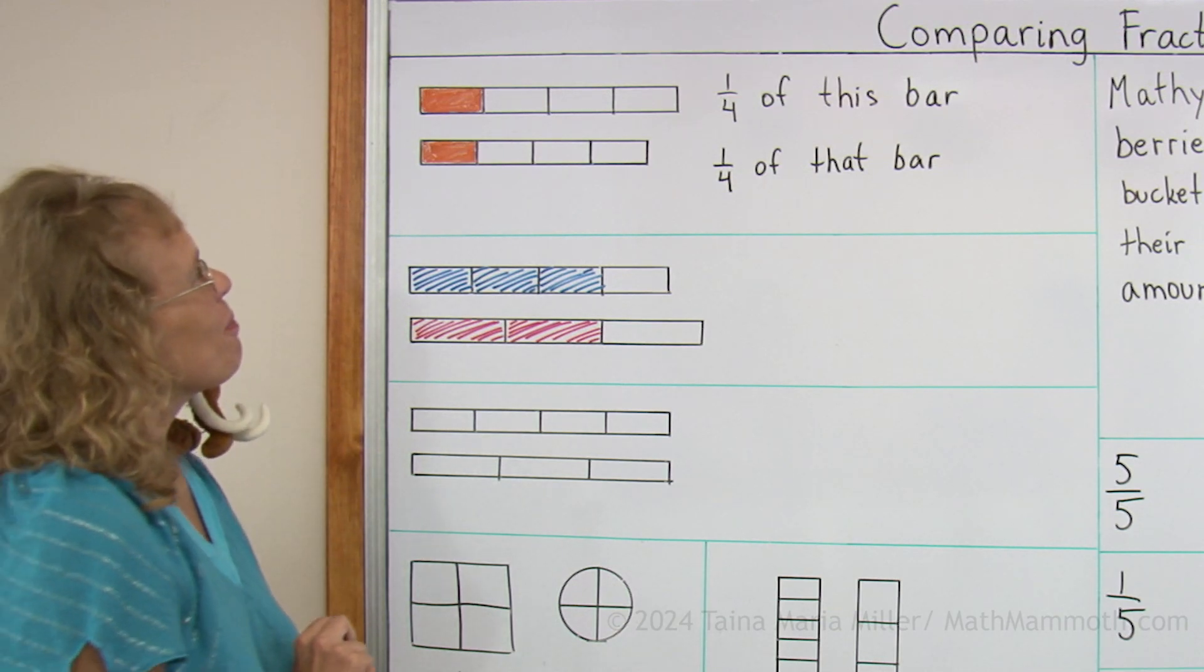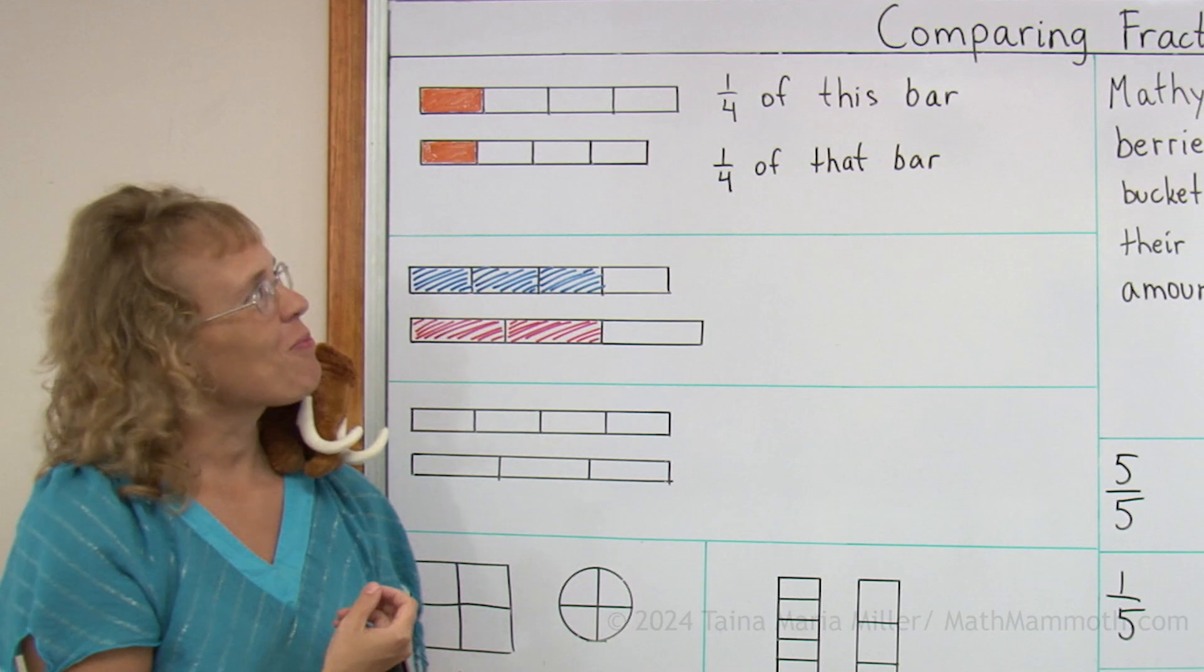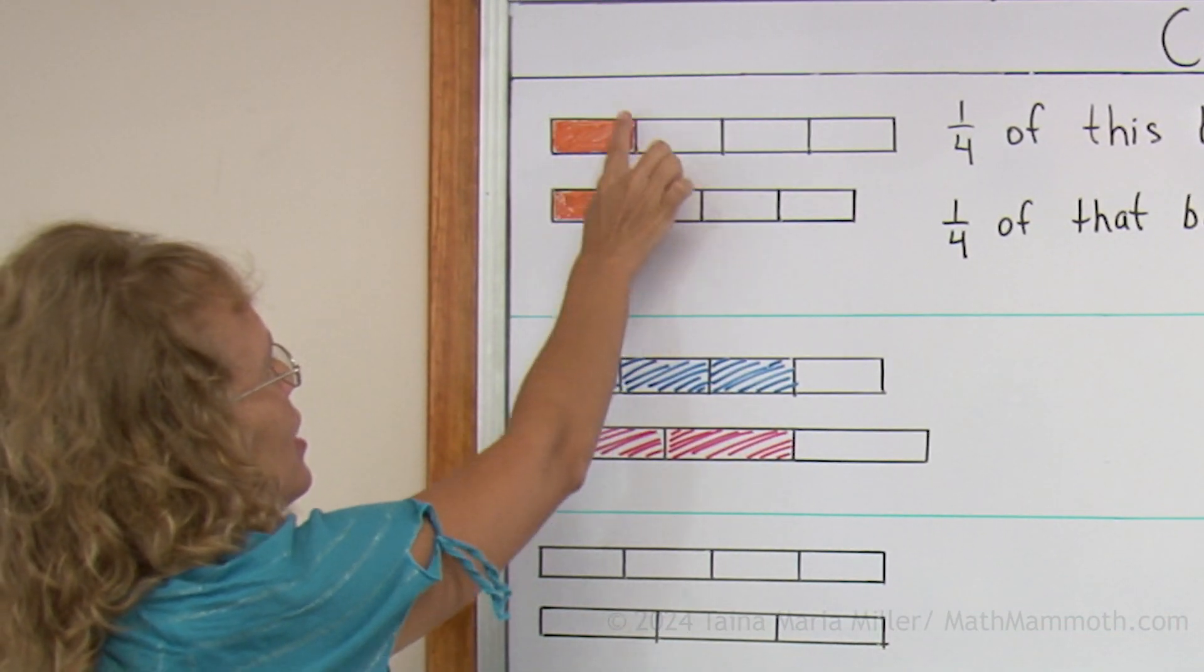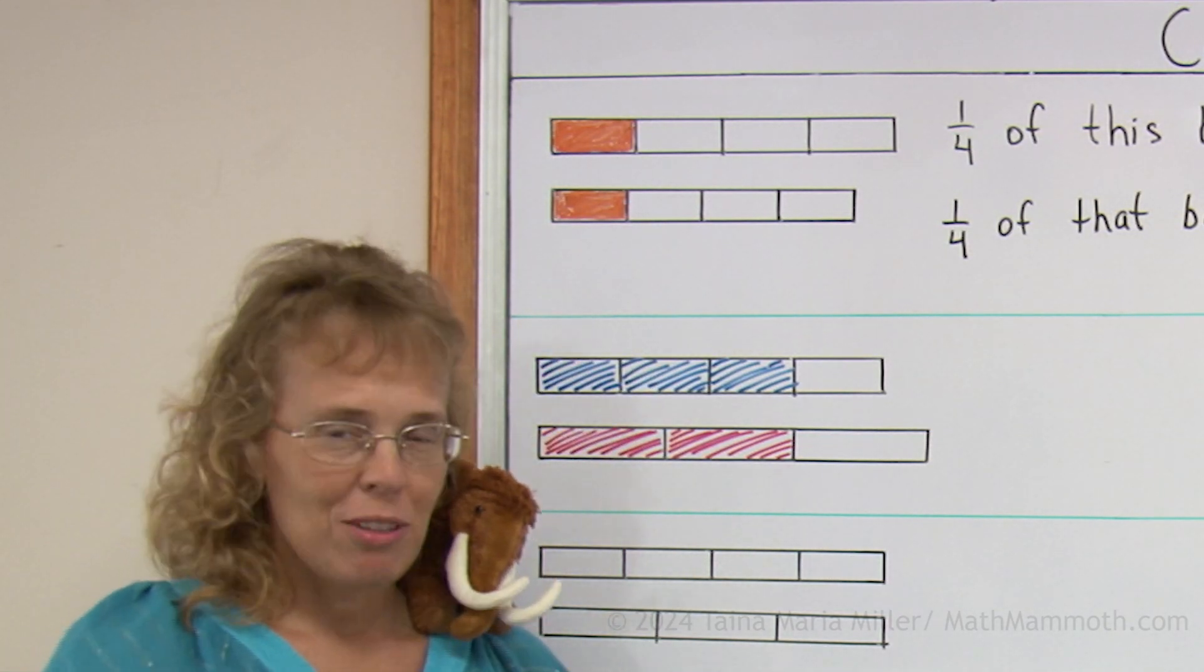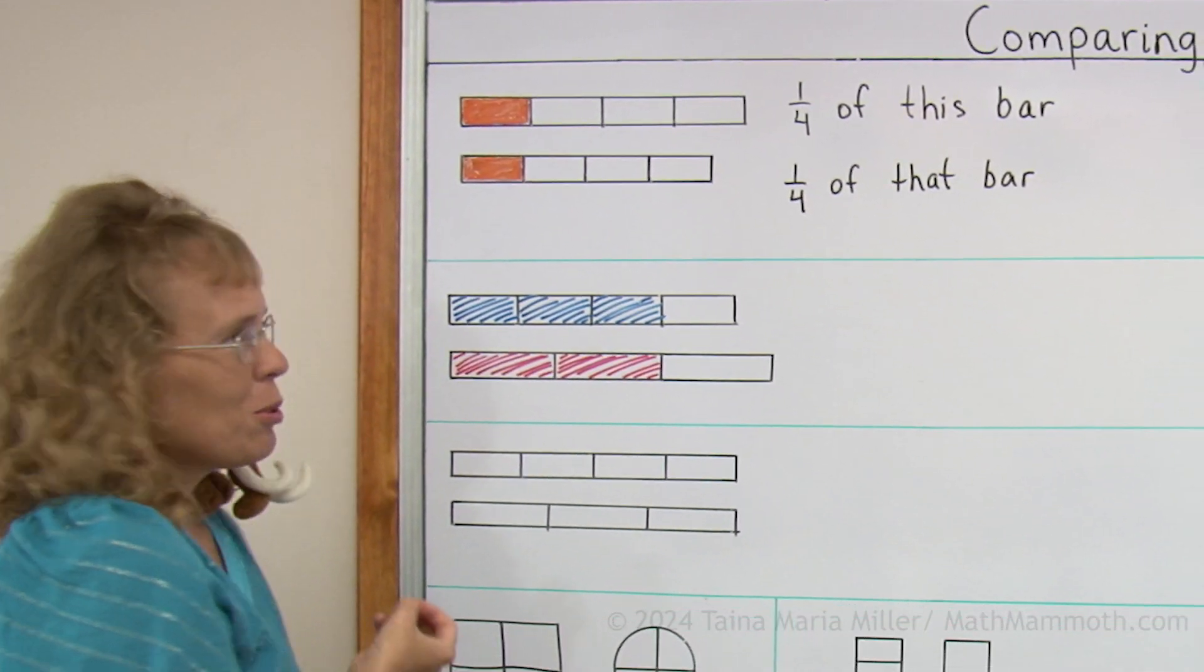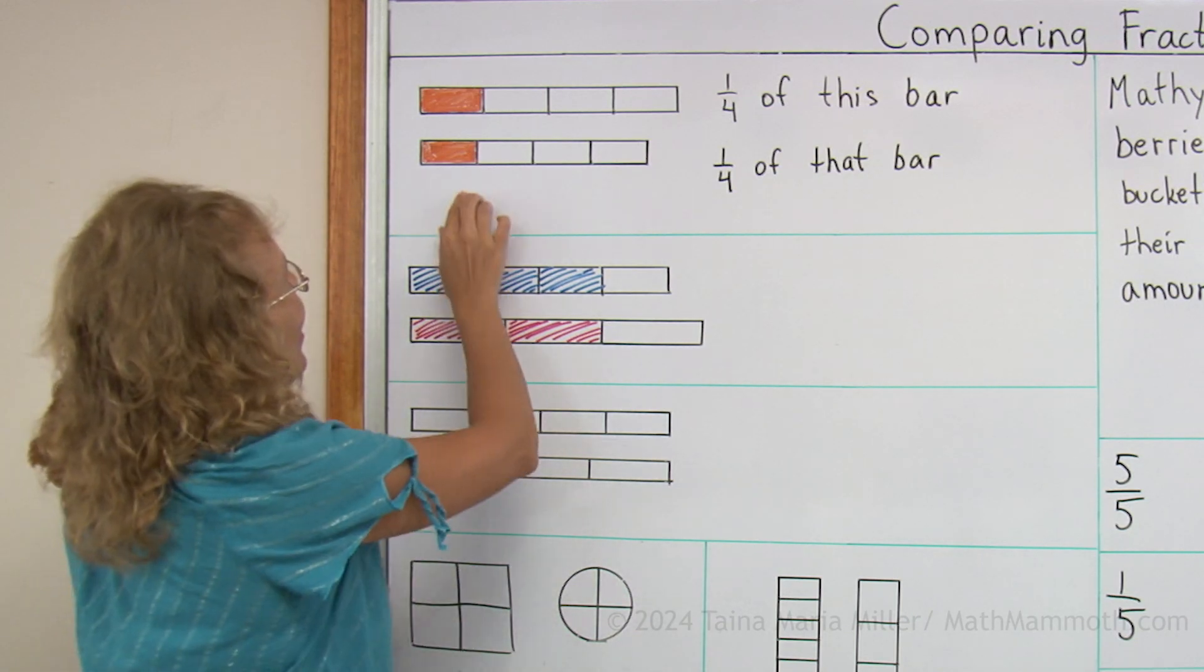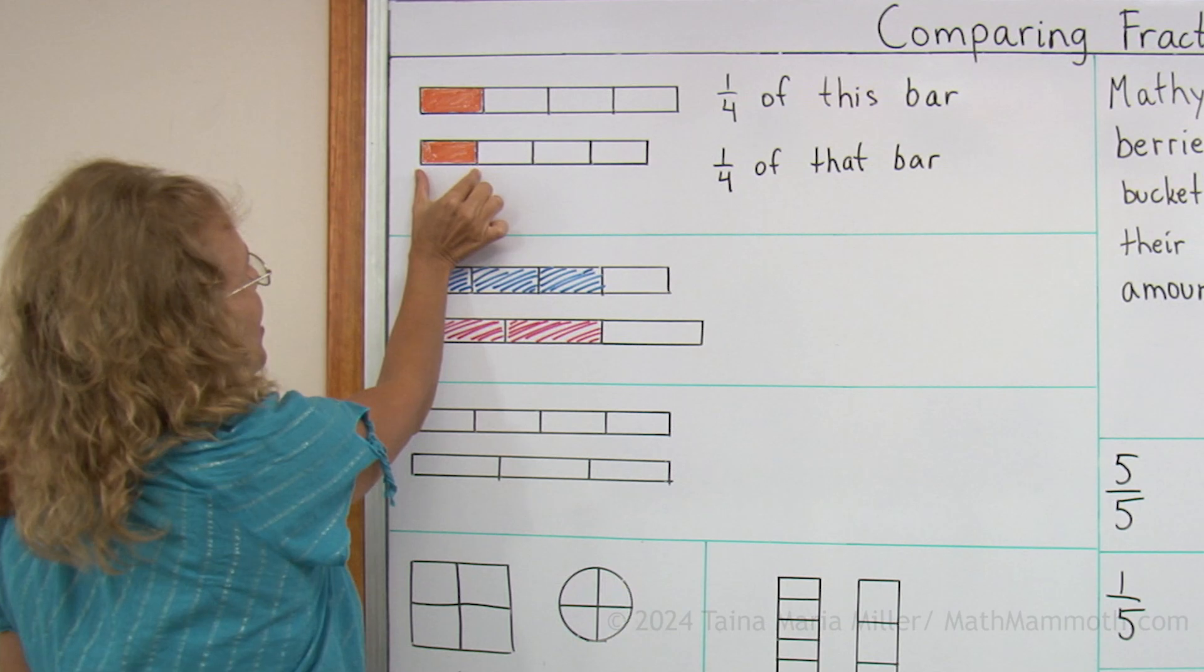First of all, I drew here two fraction bars and then colored one-fourth of each. But as you can see, if you look closely, this piece is more than this piece, right? So does that mean that one-fourth is more than one-fourth? Wouldn't one-fourth be equal to one-fourth?